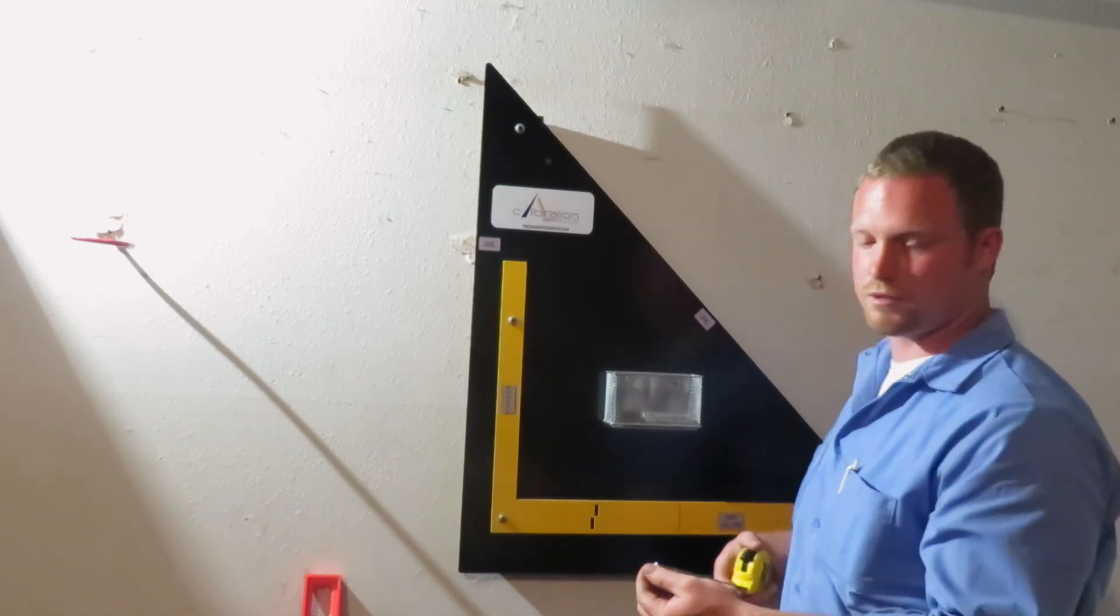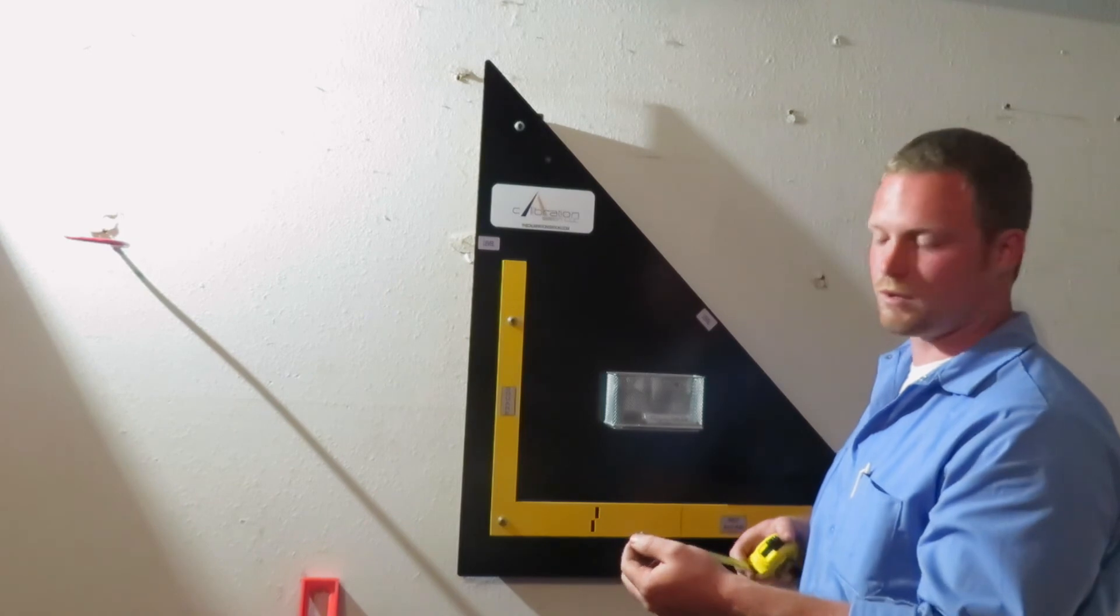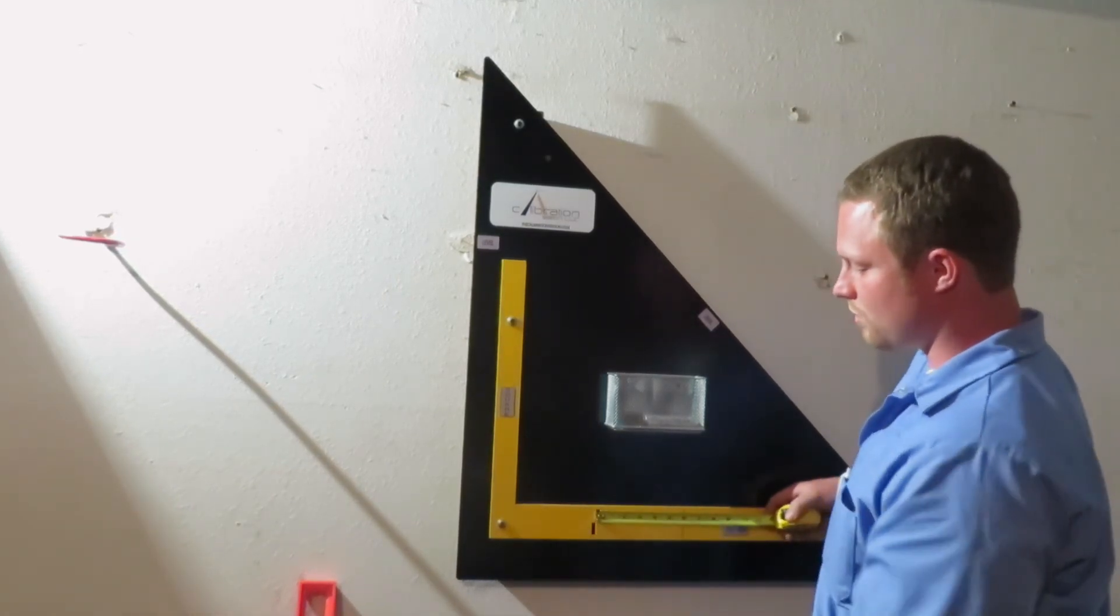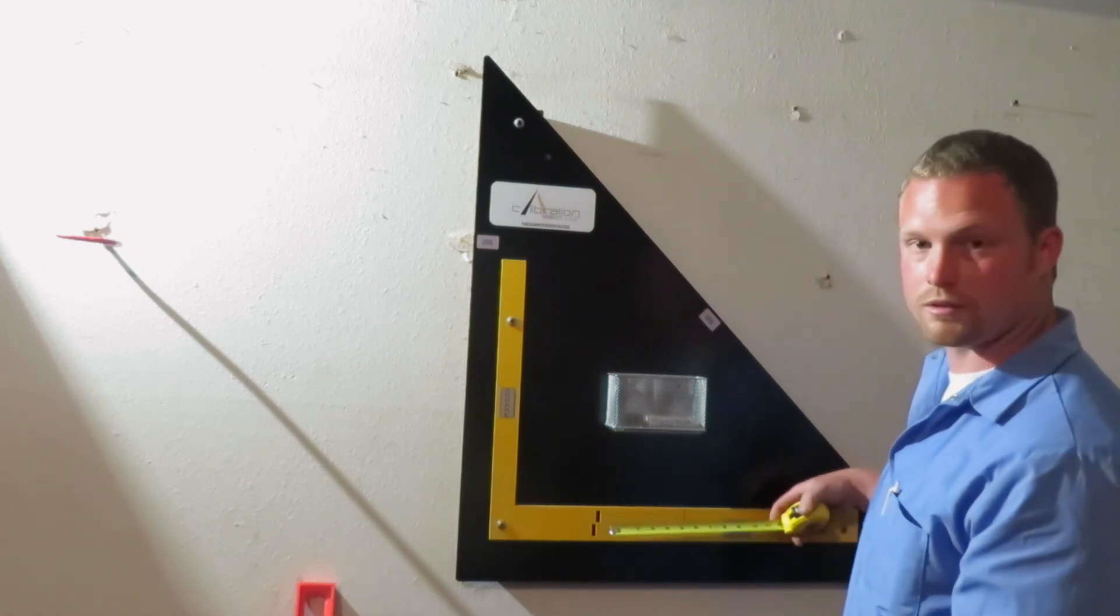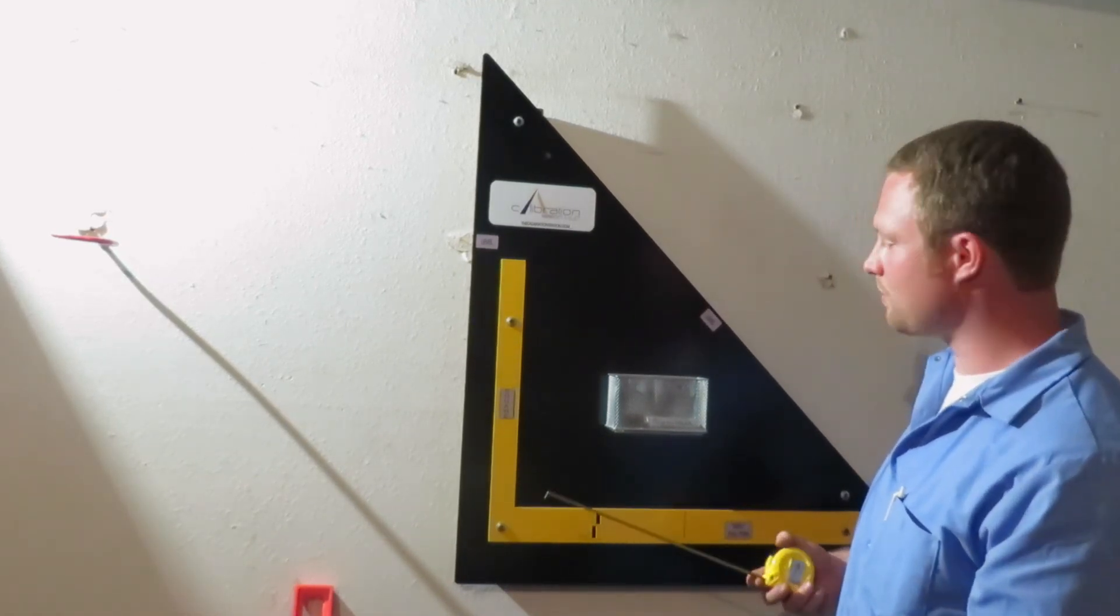This is a common problem with the tape measure because as everyone knows the rivets can get loose and worn over time, and there's some play in the tab. So this is one really easy way of verifying that it's good to go, whether you're pushing or pulling or measuring something.